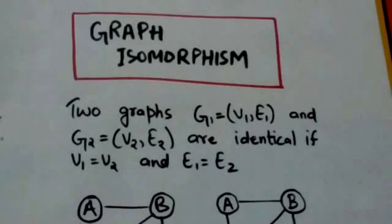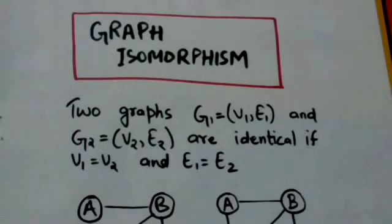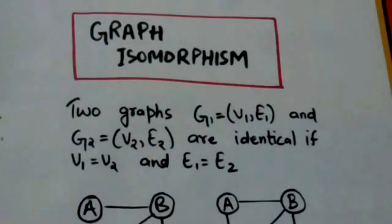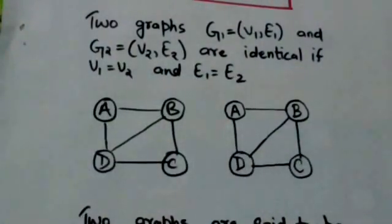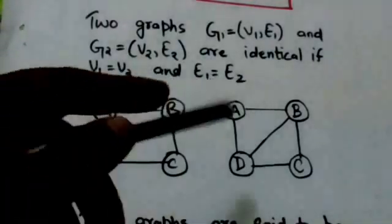Hello friends, welcome back. In this tutorial we will study about graph isomorphism. Two graphs G1 equals V1E1 and G2 equals V2E2 are identical if they have same edges and vertices. It means G1 and G2 are identical if V1 is equal to V2 and E1 is equal to E2. These two graphs are identical or equivalent because they have same vertices and edges.